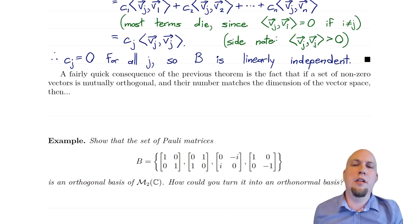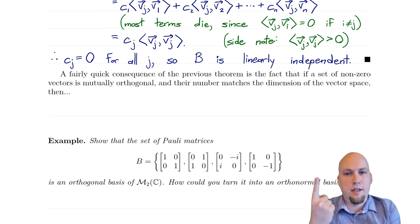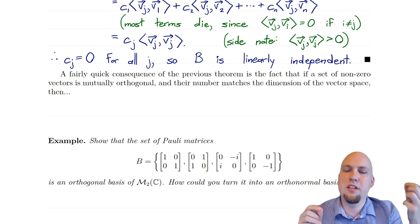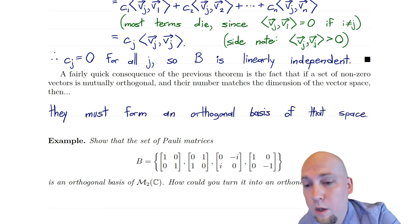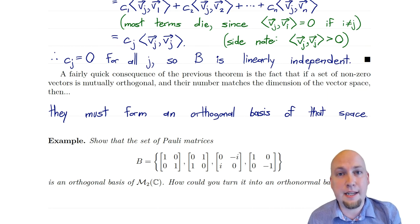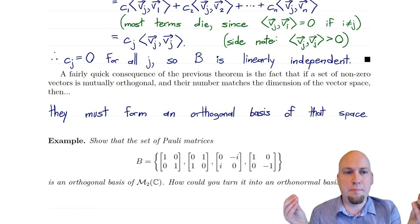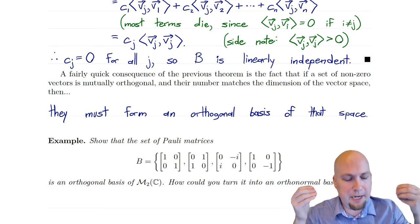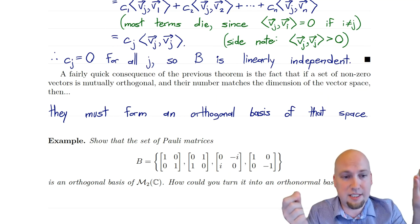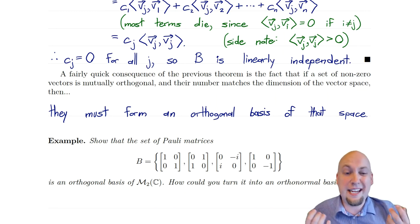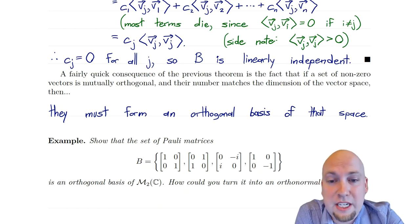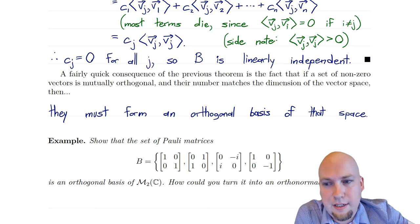Combining this with earlier results, a nice corollary is: if you have any set that is (A) mutually orthogonal, (B) all vectors are non-zero, and (C) the number of vectors matches the dimension of the vector space, then you know right away that they must form an orthogonal basis. Mutual orthogonality and non-zero-ness implies linear independence, and then matching the dimension implies they span the entire space. In a sense, you're getting both spanning and linear independence almost for free. All we have to do to check whether something is an orthogonal basis is check orthogonality and then count things. It becomes really, really easy.